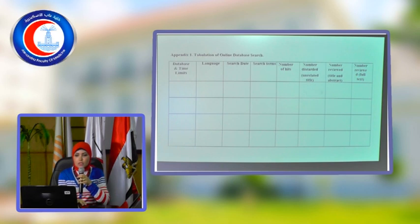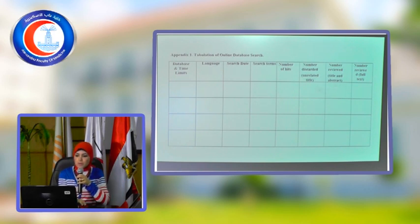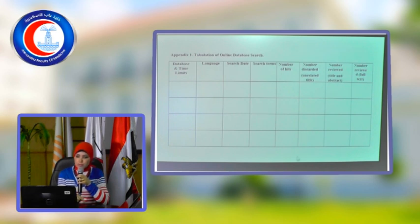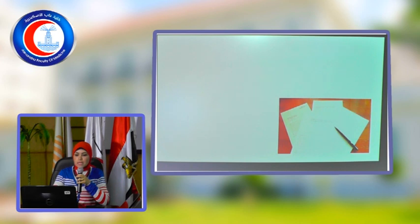So you'll write the number discarded, which are unrelated titles that you only had to enter. Then you'll write the number reviewed — the articles you actually accessed. There are examples in which you reviewed only the title and abstract, not full text. Or you accessed the full text. And every time we do a search, we will make a page for it.